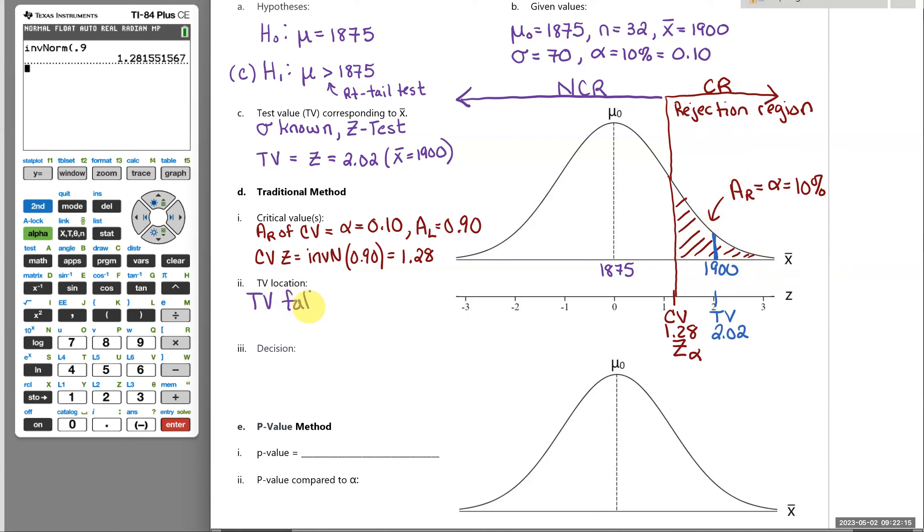All right. So my test value is falling in this shaded critical region. So we just say test value falls in the critical region, the rejection region. And that means it's so far to the right of 1875. And I'm going to reject that null hypothesis, which said the mean was 1875. So I no longer believe that that's true based on this evidence, because I got something so much higher. I now believe that the true population mean really is a higher value.